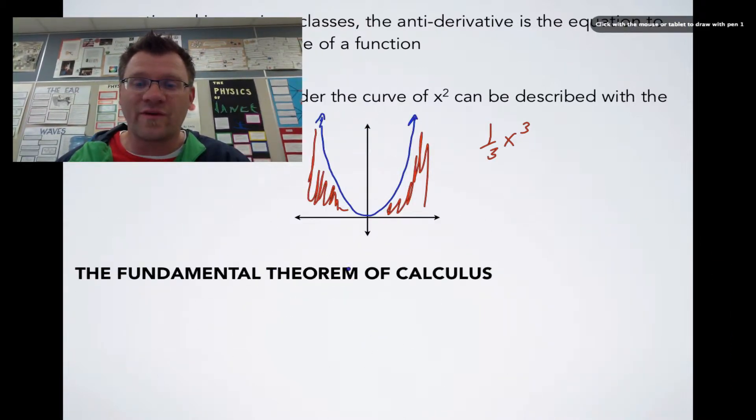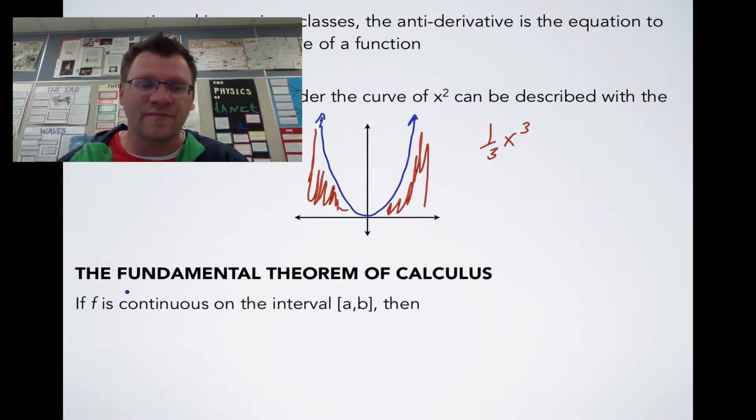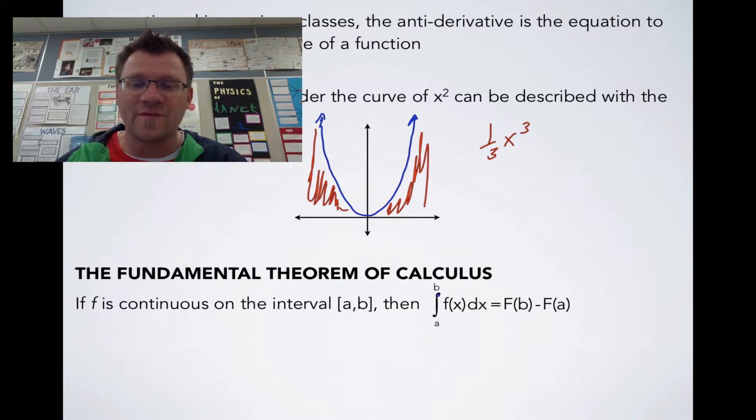The Fundamental Theorem of Calculus states: if f is continuous on the interval [a, b], then the integral from a to b of f(x) dx equals F(b) - F(a), where capital F is the antiderivative of f. So if we're going to find the area under the graph from, say, x = 1 to x = 3,